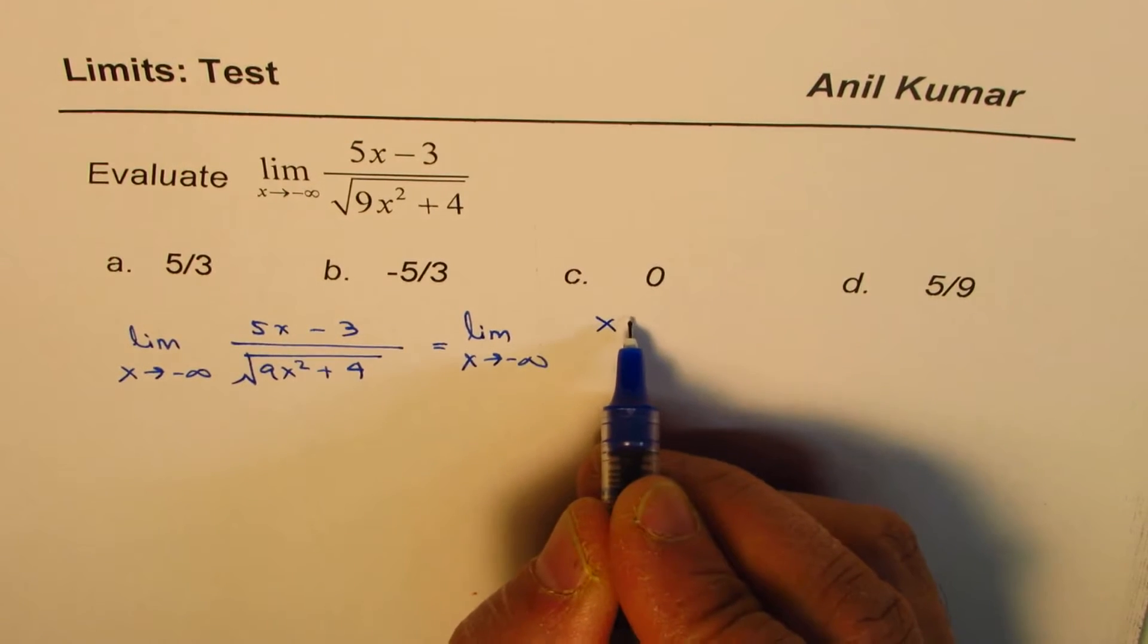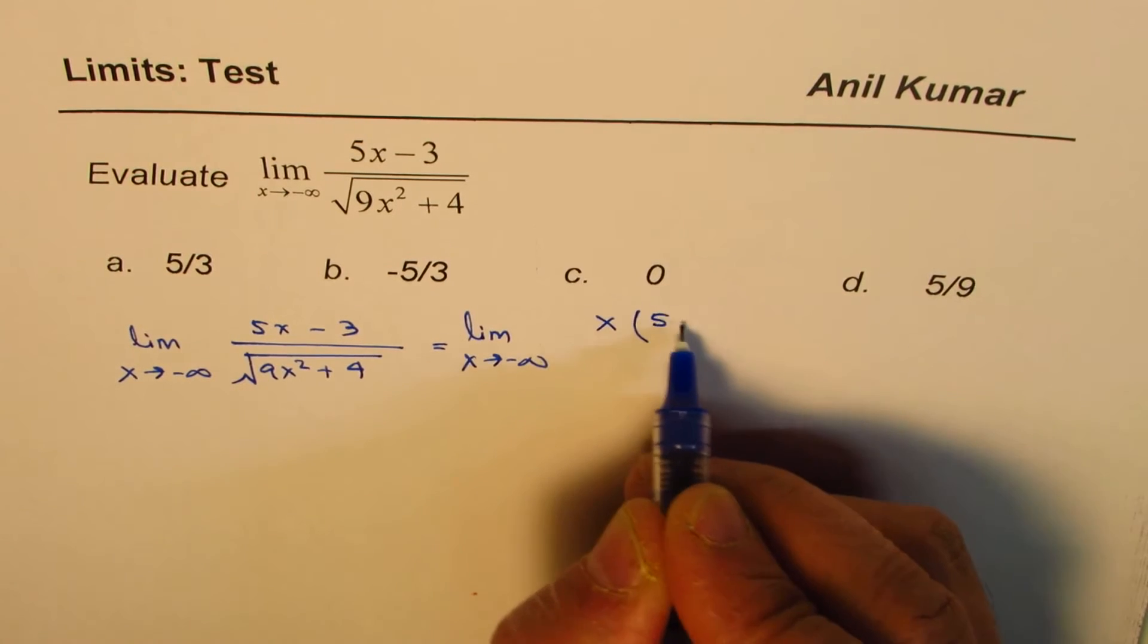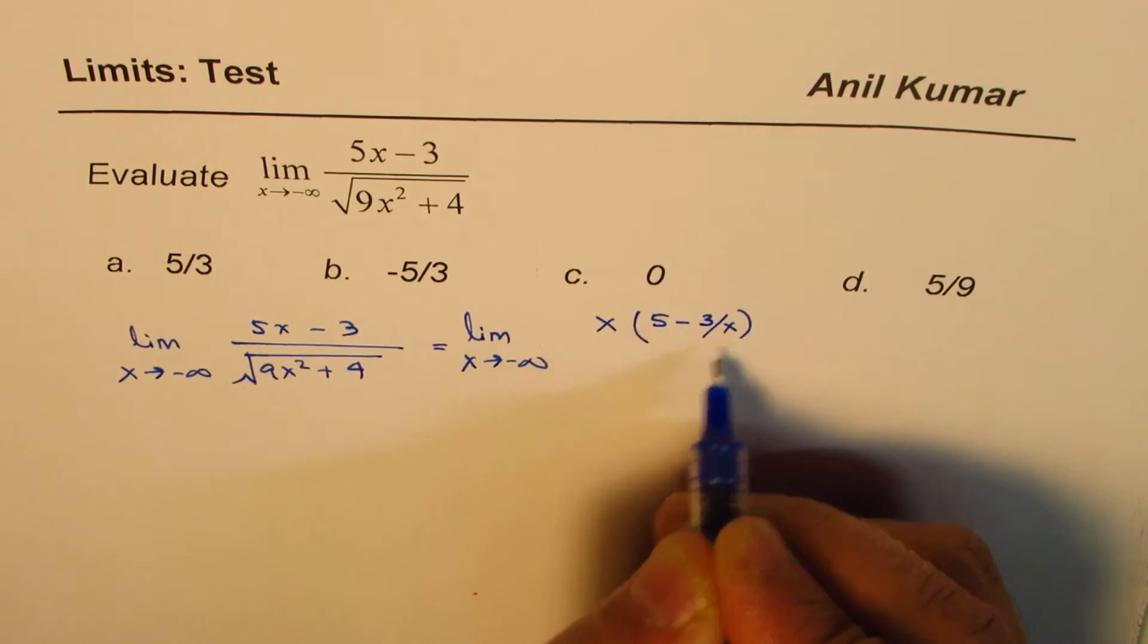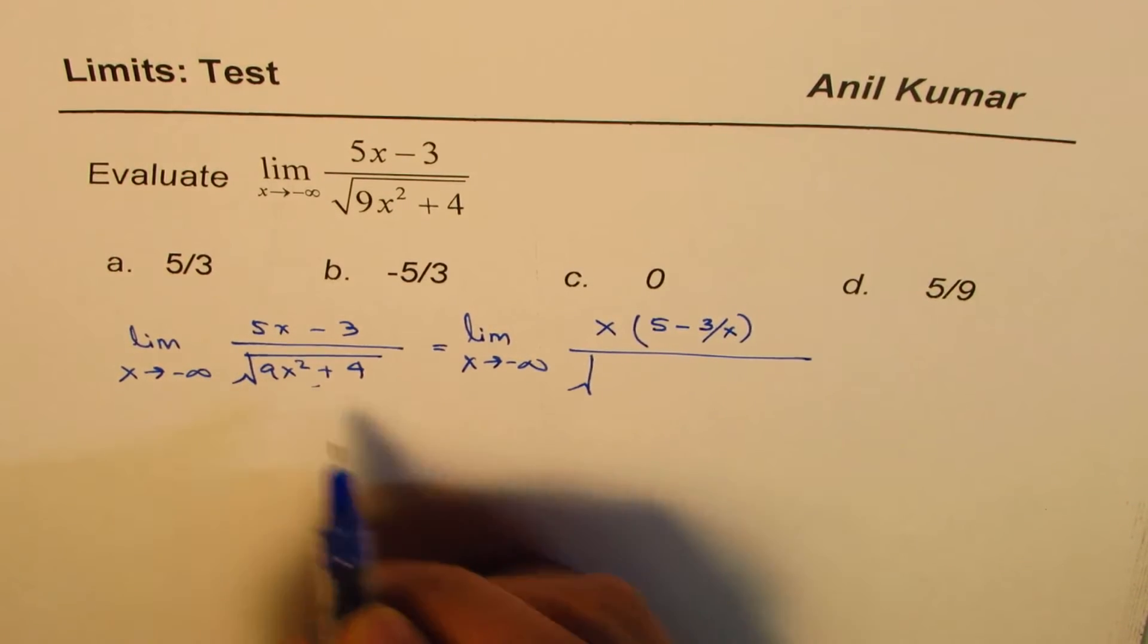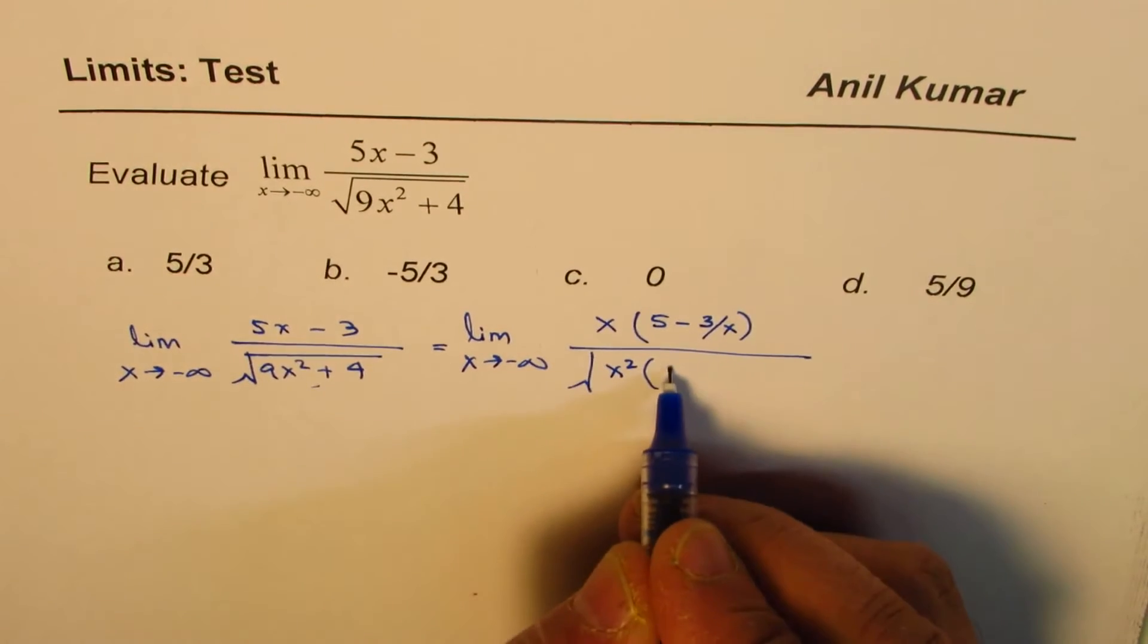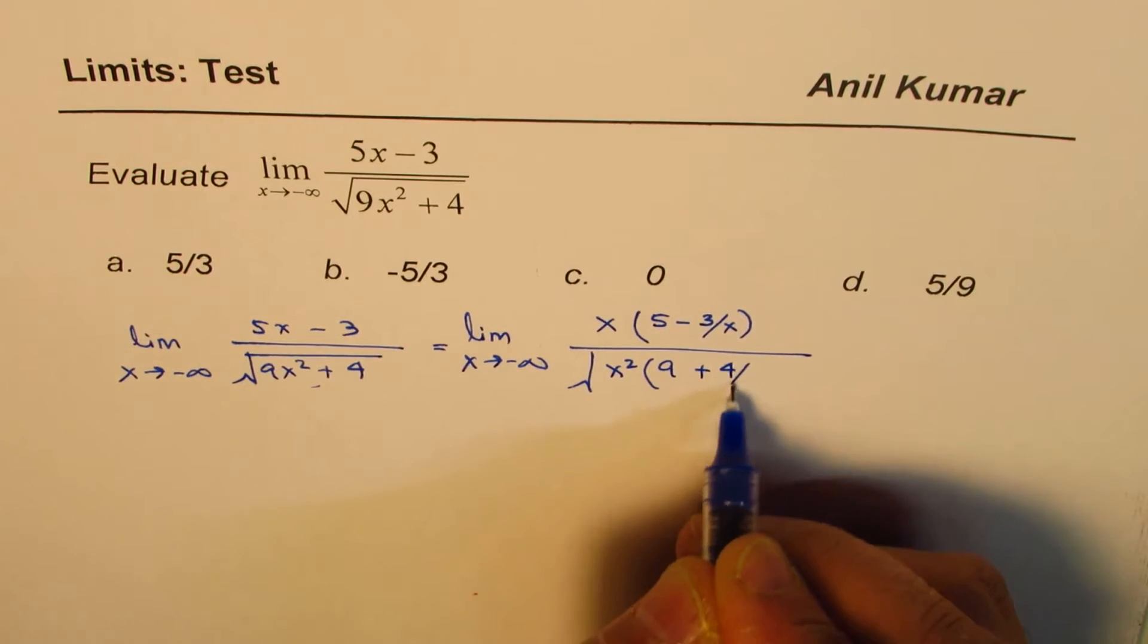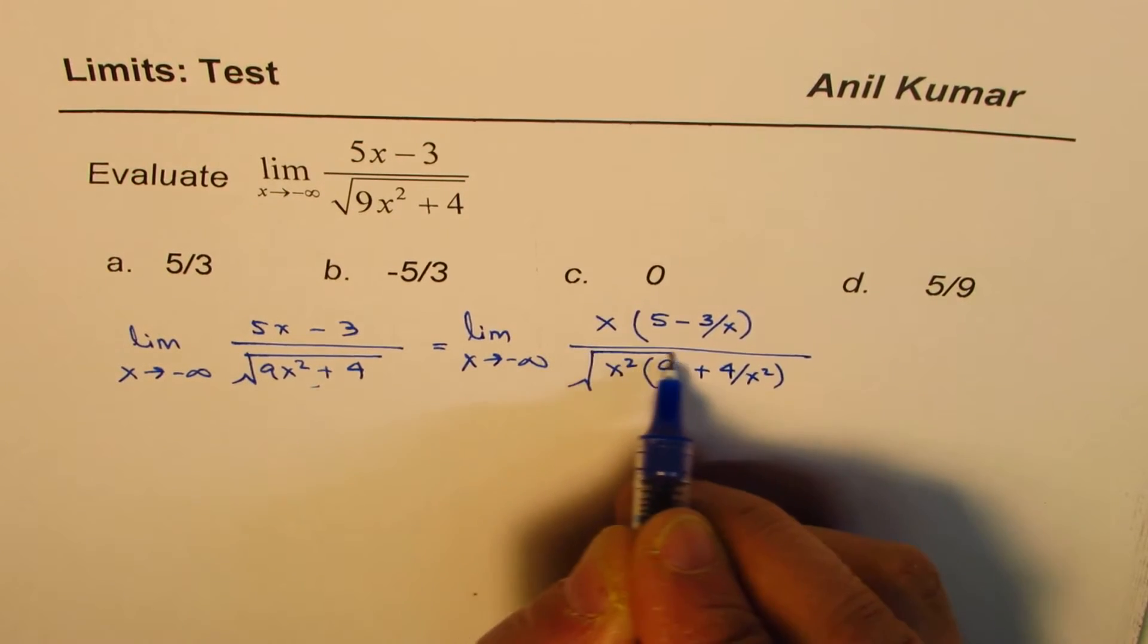So factor x here, we get within brackets 5 minus 3 over x. In the numerator and the denominator, we'll factor out x square. If I factor out x square, I get 9 plus 4 over x square within square root.